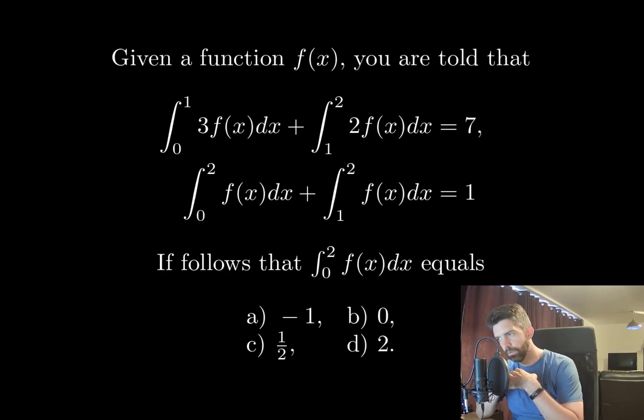and the integral from 0 to 2 of f(x)dx plus the integral from 1 to 2 of f(x)dx equals 1. It follows that the integral from 0 to 2 of f(x)dx equals: a) -1, b) 0, c) 1/2, or d) 2.